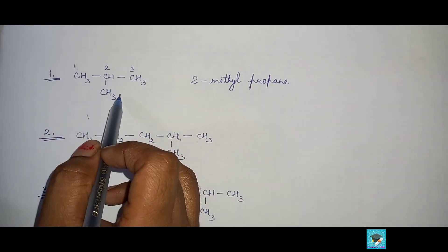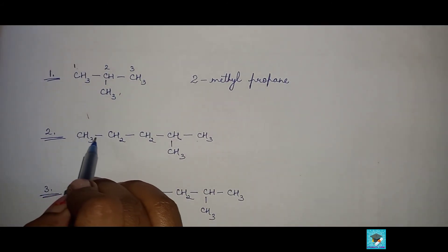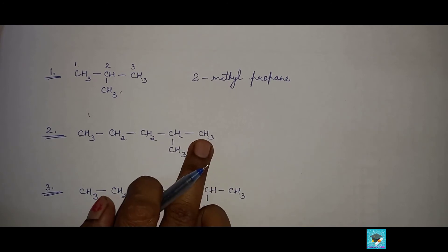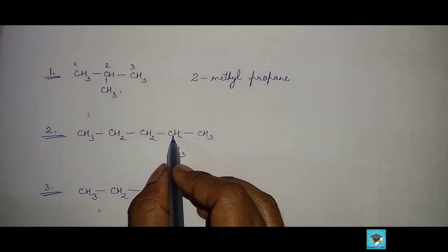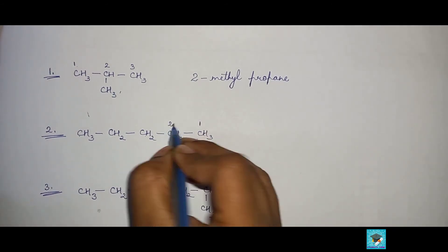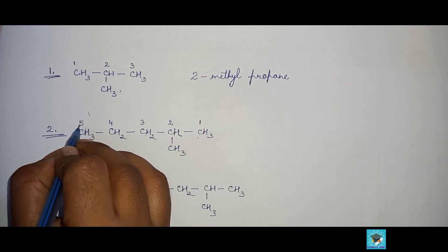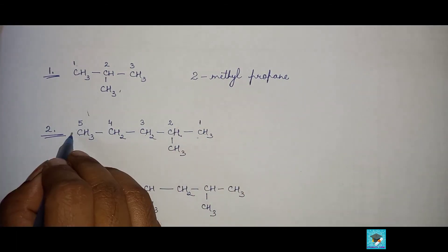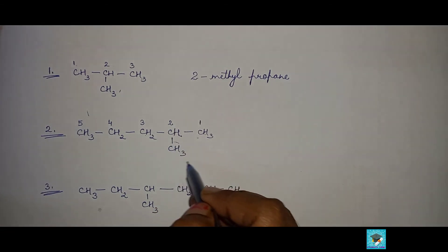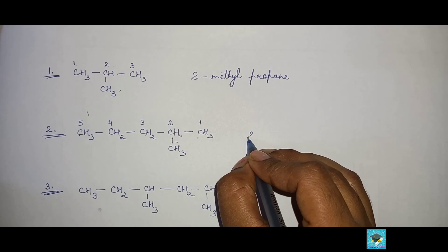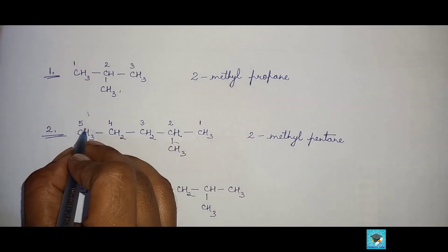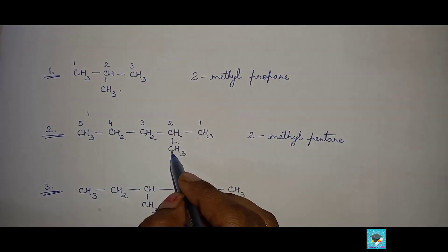The second example is CH3–CH2–CH2–CH–CH3. We give numbers such that the carbon atom having the alkyl group gets the least number, so we start labeling from the right side: 1, 2, 3, 4, and 5. Five atoms are present in the longest chain, so it will be pentane. Carbon number 2 is having the methyl group, so we name it 2-methylpentane — pentane because of five carbon atoms, and 2-methyl because carbon 2 has the methyl group.